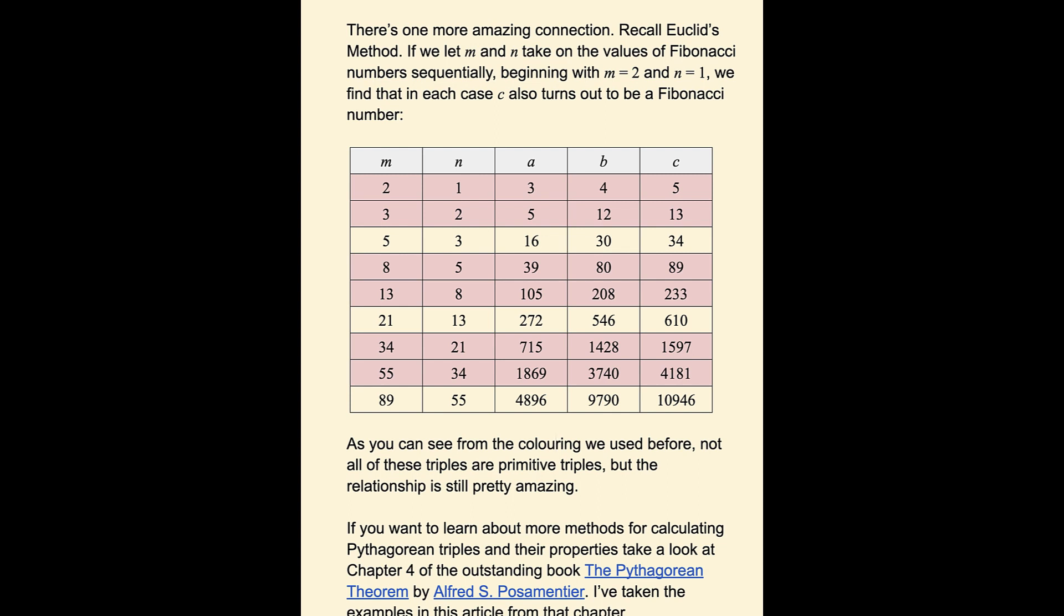We get the primitive 3, 4, 5. For M equals 3, N equals 2, we get 5, 12, 13.